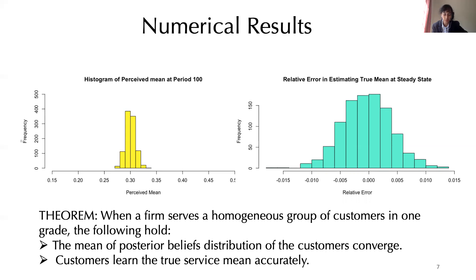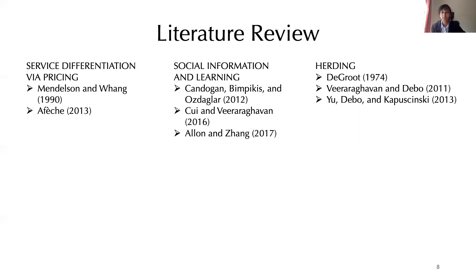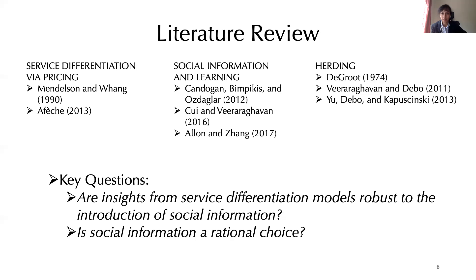But does this still hold when customers are not homogeneous — what happens when customers are served in different service grades? Typically, service differentiation by pricing, which is a well-studied topic in operations, assumes that the information obtained by customers is complete, meaning customers have full prior information about the service quality on each grade even before opting for service. But this is typically not true — information is accumulated by repeatedly interacting with the firm and obtaining information from peers. The key question is: do the insights from traditional service differentiation models still hold when customers learn socially, and is social information a rational choice, or should customers rely on personal experiences?